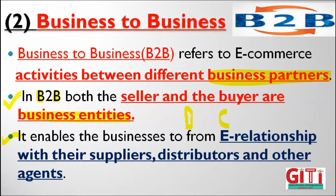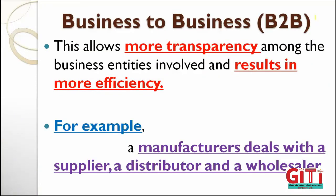B2B enables businesses to form relationships with their suppliers, distributors, and agents. The business cycle includes suppliers, distributors like franchises, and agents — all come under B2B category. Both sides are businessmen; consumers are not allowed. Products are bought and sold in bulk in B2B. Example: a manufacturing company person sells in high bulk directly to a supplier, distributor, or wholesaler — no consumer or customer in between.